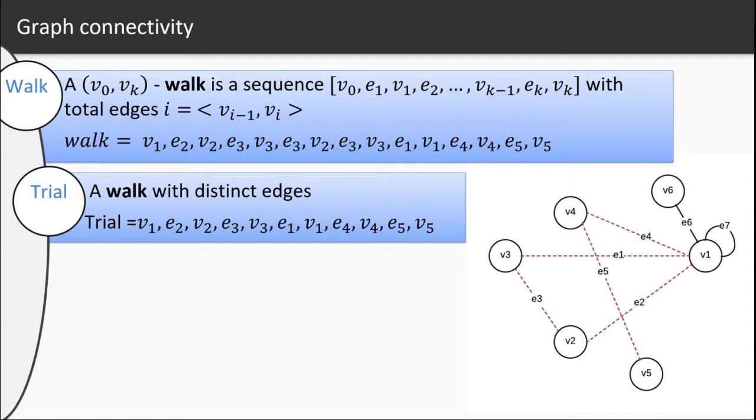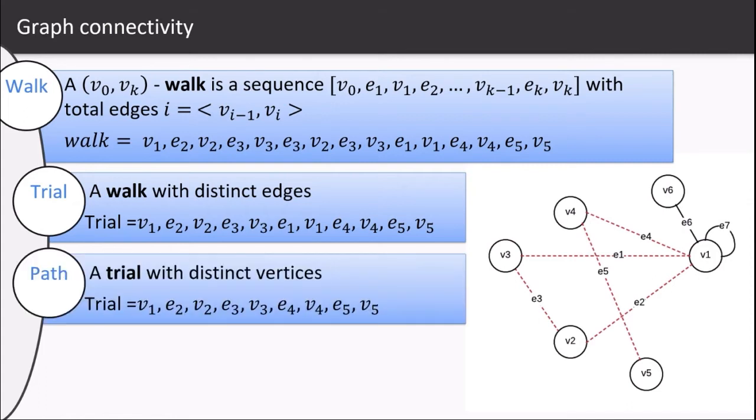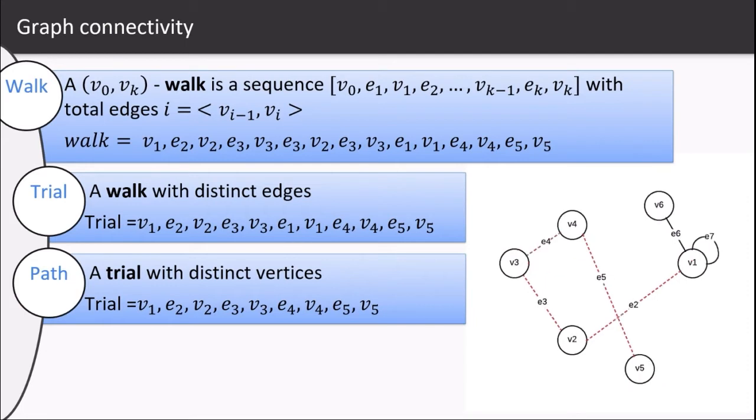A path is a trial that should not share common edges as well as common vertices. For that, we need to remove the edge e1 because it is allowing the vertex v1 to come twice in the way. So this time our path is v1, v2, v3, v4, and v5.